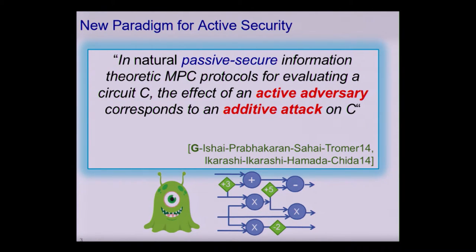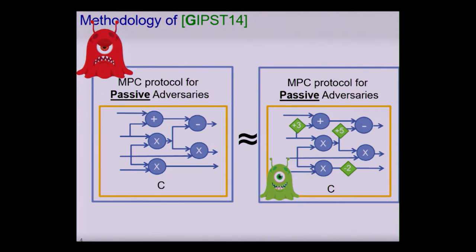The crucial observation is that these values are selected before the adversary knows what values will be on the circuit. So this additive attack — for example, this constant 5 — modifies a wire by adding 5 to whatever is going out from the output of a multiplication gate before it enters the next gate. In our previous work, we proved that for many natural protocols, whatever an active adversary can do to a passively secure protocol can be simulated by an additive attack on the underlying circuit.